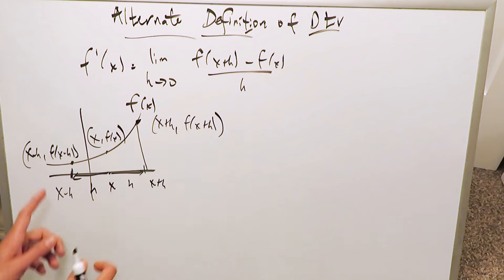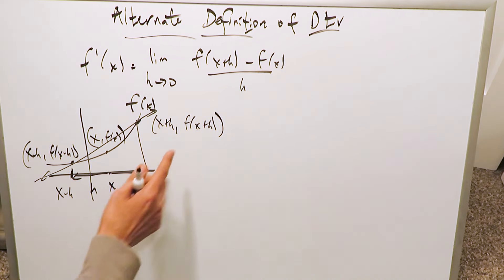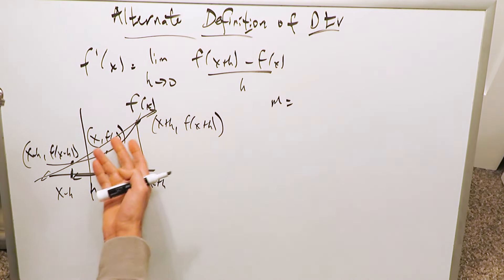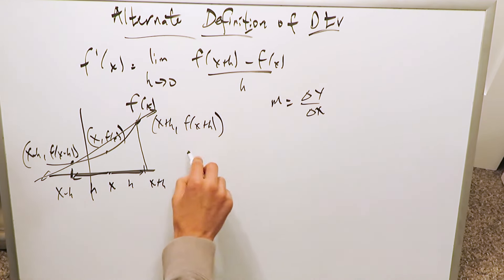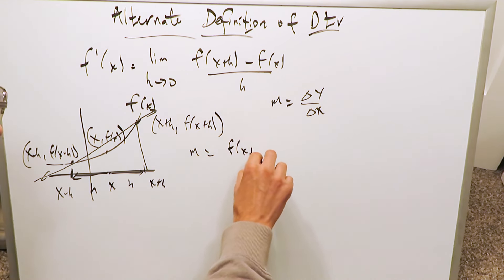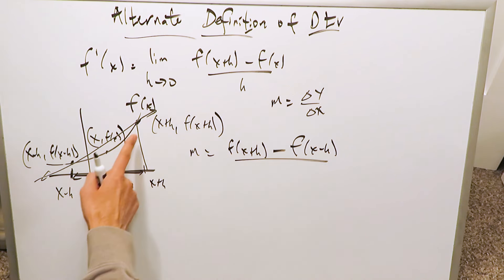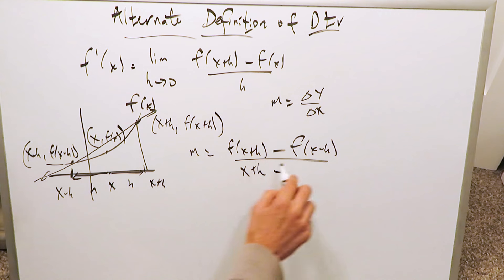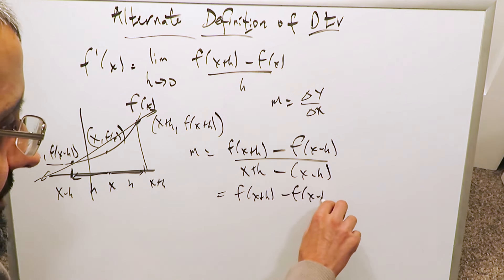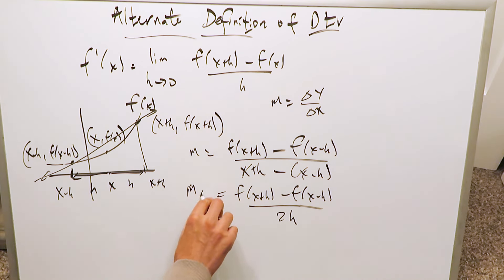If you were to take these last two points and connect them, you have developed a secant line. If you were to determine the slope of the secant line, you have x2, y2, x1, y1 — do the slope formula. It will be change in y divided by change in x. The slope of this secant line connecting these two points will be f of x plus h, that's my y2, minus f of x minus h, that's my y1, divided by x plus h minus x minus h. Simplifying, you get f of x plus h minus f of x minus h divided by 2h.